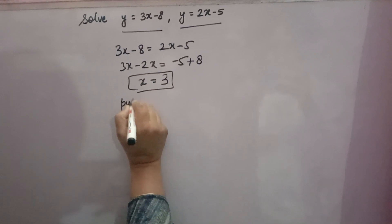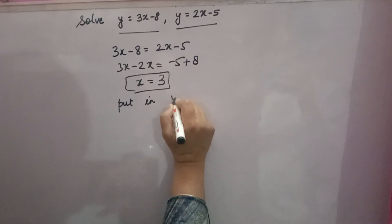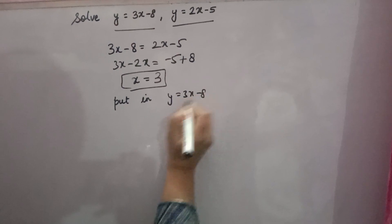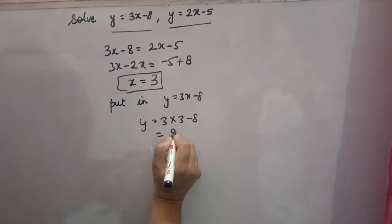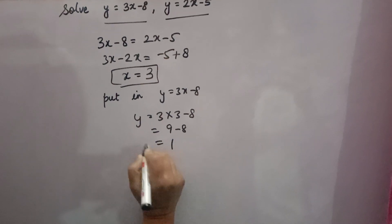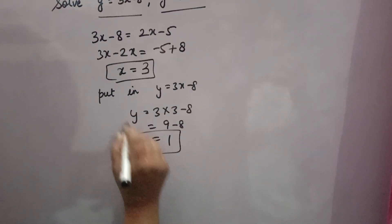Put in any equation. Put in y is equal to 3x minus 8, you will get y value. 3 into 3 minus 8, 9 minus 8, that is 1. So y is equal to 1 and x is equal to 3 is the answer.